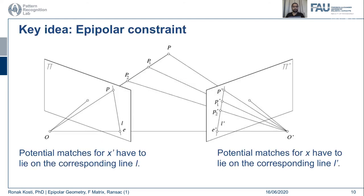That is what epipolar geometry tries to solve. The key idea is the epipolar constraint. Let's say you have image plane Pi and Pi-dash is another image plane. P is a world point. O is the camera center for Pi and O-dash is the camera center for Pi-dash. The epipolar constraint says: through one camera you're viewing point P, but P can be anywhere along a ray — it could be P2, P1, or P itself. When you look at point P in this image, you don't know its distance.